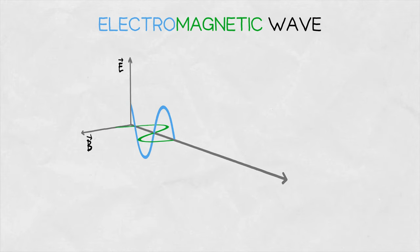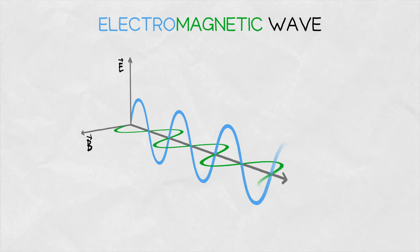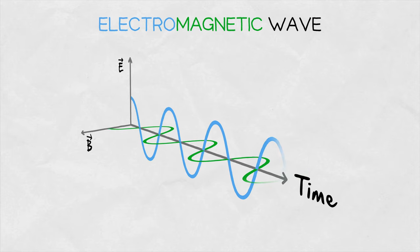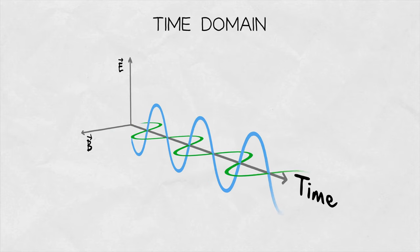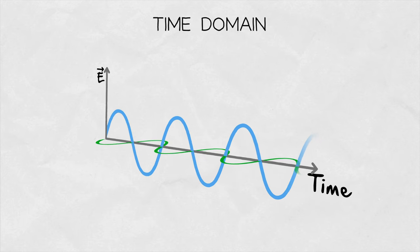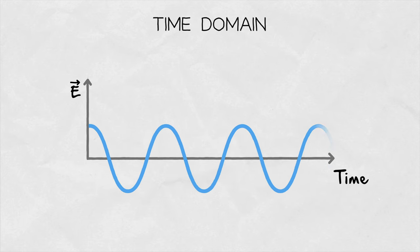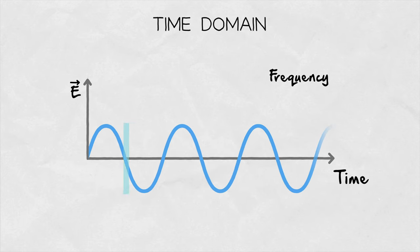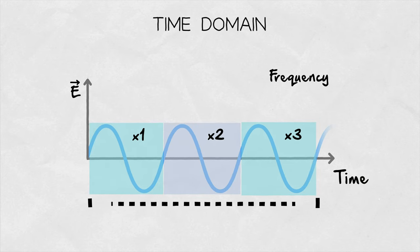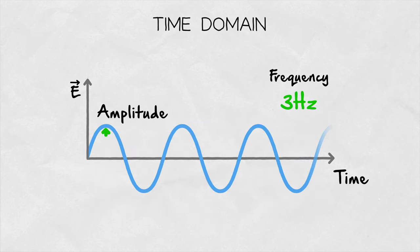Let's start with an electromagnetic wave. The electric and magnetic intensities of a wave change over time as it propagates through space. This is the representation in the time domain. A wave is characterized by the amplitude and frequency. To get the frequency, we simply count the number of times a wave repeats in one second. This gives us its frequency in hertz. The amplitude can be directly read from a time plot.